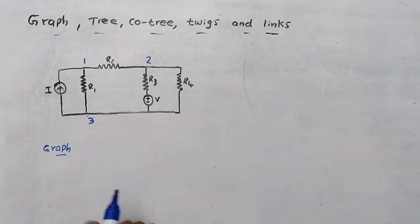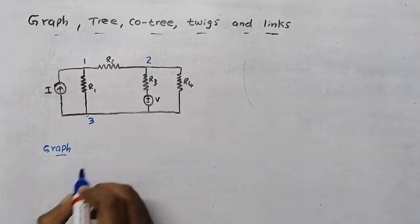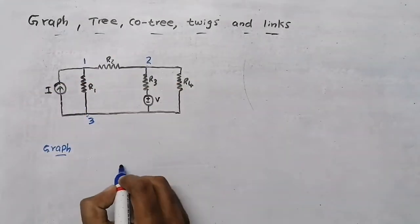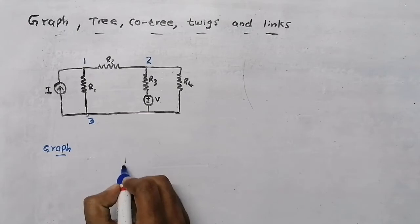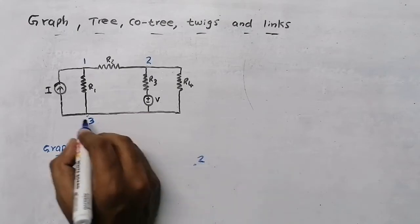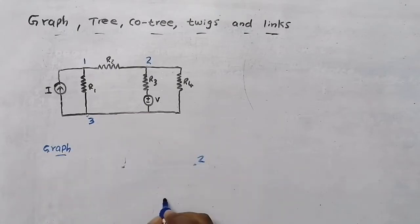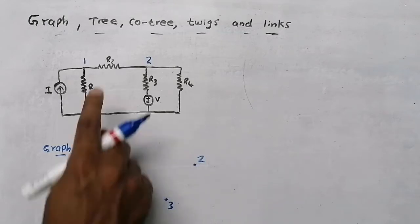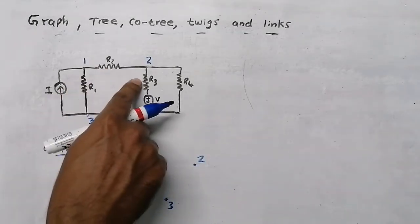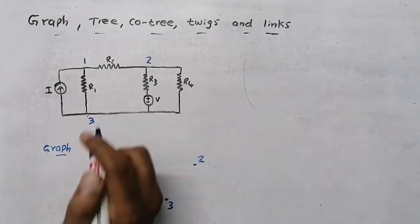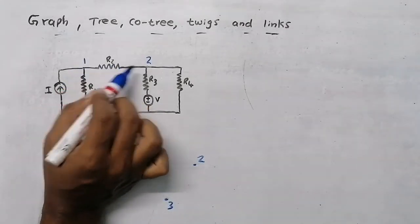Now we are going to draw the graph. For drawing the graph, first we plot the nodes: node one, node two, and the ground node — node three. We have three nodes. The elements connected between nodes are called branches.